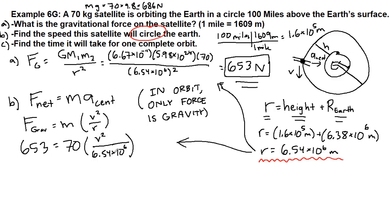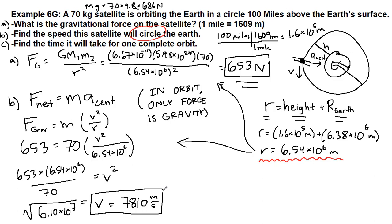So we're looking for v squared. We are going to multiply both sides by 6.54 times 10 to the 6th. So 653 times 6.54 times 10 to the 6th, and we are going to divide both sides by 70, so that what we end up with is v squared all by itself. And so v is going to be the square root of this mess. When we take the square root, we get 7810 when we round meters per second. That is the speed of the satellite in its orbit.